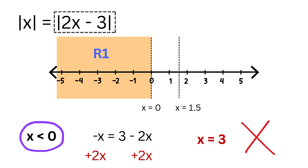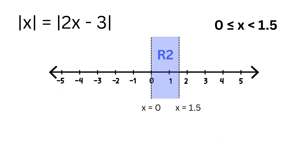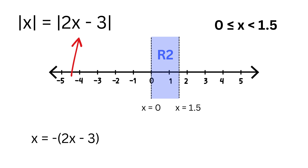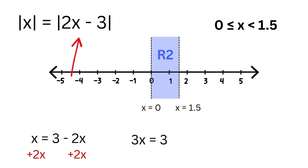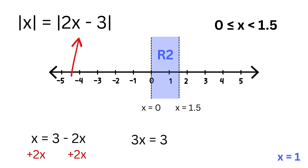Region 2: when x is between zero and 1.5, the absolute value of x is just x because x is non-negative, while the absolute value of 2x minus 3 is still minus of 2x minus 3, because in this middle range that inside expression is still negative. So the equation becomes x equals 3 minus 2x. Add 2x to both sides to get 3x equals 3, then divide by 3 to get x equals 1. That candidate fits the region because 1 is between 0 and 1.5 — so this is a valid solution!